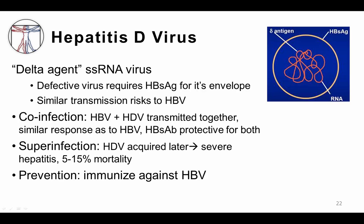The hepatitis D virus, also known as the delta agent, is a single-stranded RNA virus. However, this virus is defective at replication and actually requires hepatitis B surface antigen for its envelope. Therefore, patients who are infected with hepatitis D usually require hepatitis B co-infection — either at the same time as hepatitis D, or in a patient who has already been exposed to hepatitis B. Hepatitis D has similar transmission risks as hepatitis B, including IV drug use, high-risk sexual exposures, being from an endemic area, or needle stick injuries.